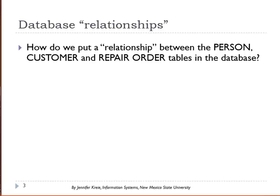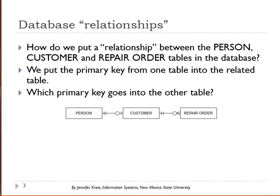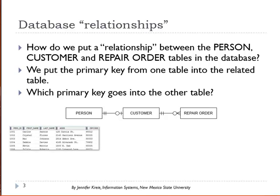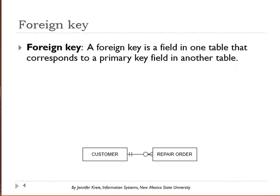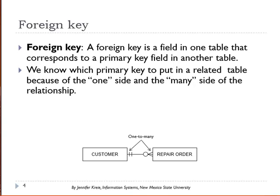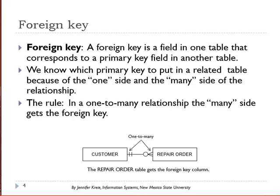How do we put a relationship between person, customer, and repair order tables in the database? We put the primary key from one table into the related table, and that becomes a foreign key field. Which primary key goes into the other table based on this data model? A foreign key is a field in one table that corresponds to the primary key field in the related table. We know which primary key to put in a related table because of the one side and the many side. The rule is: in a one-to-many relationship, the many side gets the foreign key.